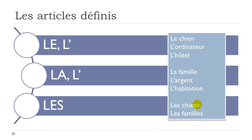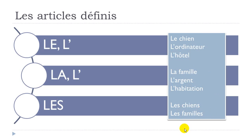For the plural form, take 'chien' — add an 's' at the end and you get 'les chiens' (the dogs). Take 'famille' — add a final 's' and you get 'les familles'. Remember: 'chien' singular and 'chiens' plural have the same pronunciation — the final 's' is not pronounced. Same for 'famille' and 'familles' — the 's' is not pronounced.